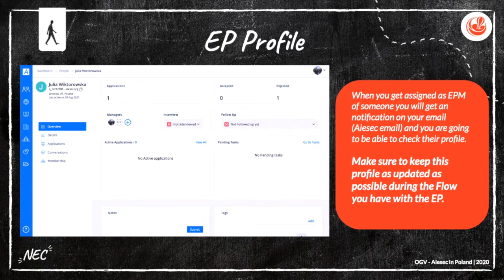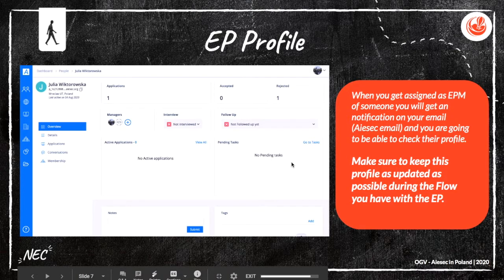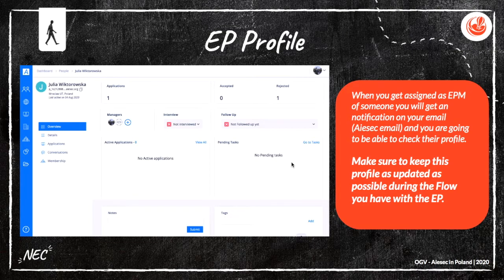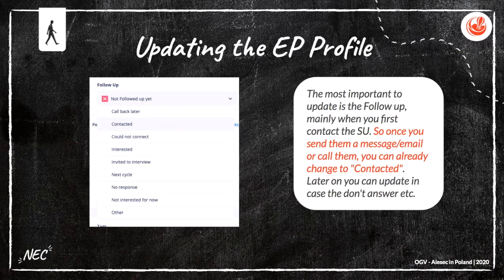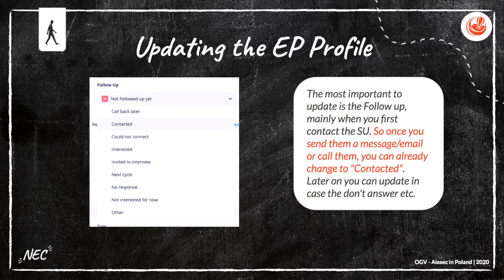This is how an EP profile looks. When you get assigned as EPM for someone, you will get a notification on your email, mostly your AIESEC email, and you will be able to check their profile. Make sure to keep this profile as updated as possible during the flow you have with the EP. Updating the EP profile is a super relevant activity. The most important thing to update is the follow-up, mainly when you first contact the sign-up. Once you send them a message, email, or call them, you can already change the status to contacted. Later on, you can update it — if they don't answer, maybe this person is not interested, or maybe they are interested in next summer, so you can change this status.